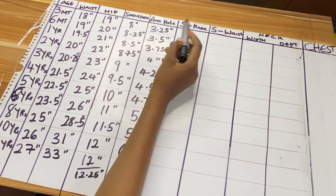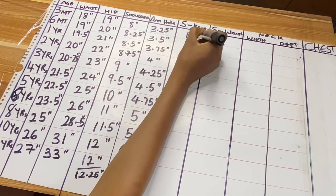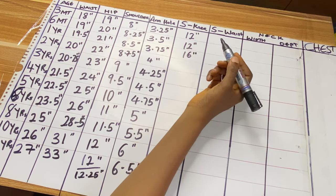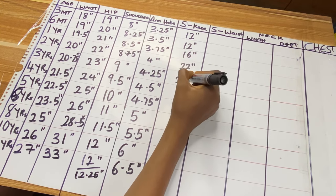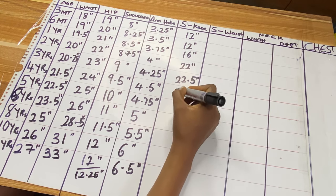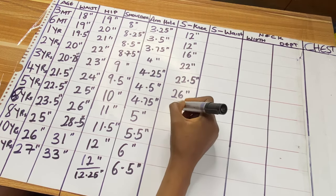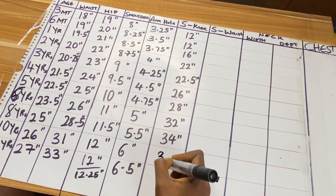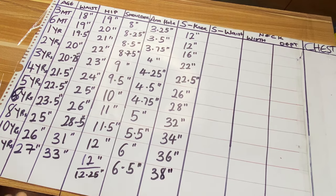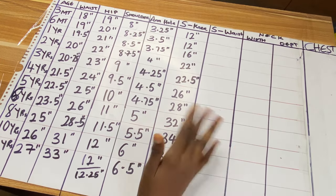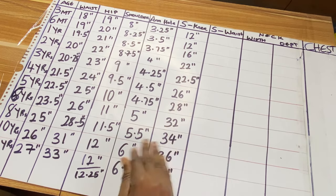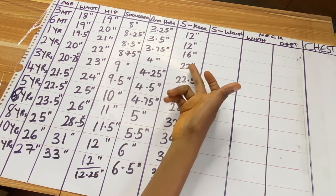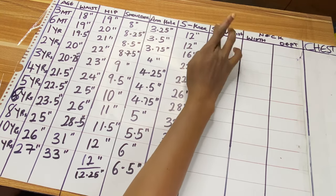Next is shoulder to knee measurement. For three months 12 inches, six months 12 inches, one year 16 inches, two years 22 inches, three years 22.5 inches, four years 26 inches, five years 28 inches, six years 32 inches, eight years 34 inches, ten years 36 inches, and twelve years 38 inches. This is a general chart for taking measurements for baby girls.